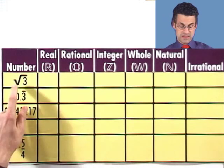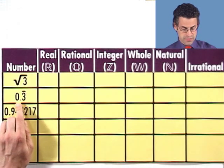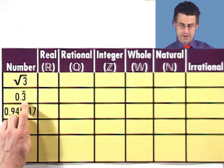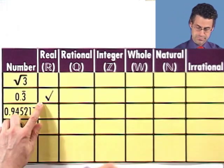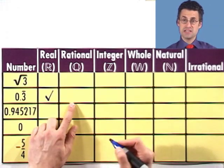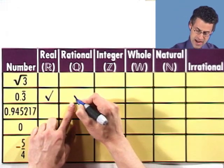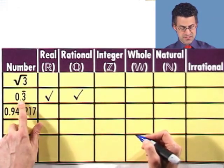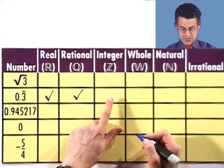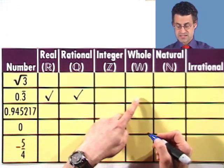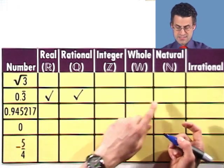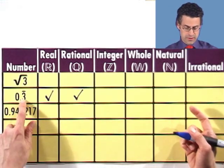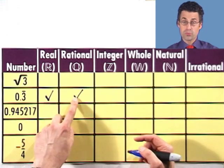I'm going to leave the first one for last. So 0.3 with a bar, that means it's 0.333 repeating forever. It's a real number. And since it repeats forever, this decimal expansion, it's a rational number. But it's not an integer because there's this decimal part to the right of the decimal point. And therefore, it's not a whole number, it's not a natural number. And since it's rational, it's not irrational. So 0.3 bar is a real rational number.